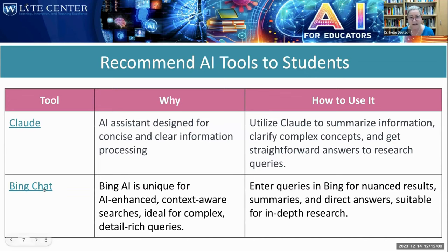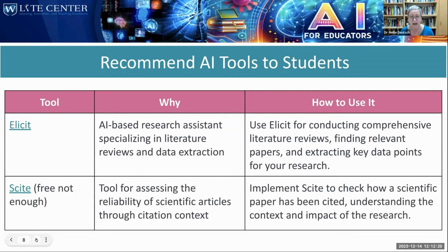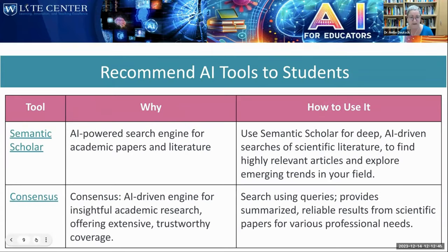And then there's Bing Chat, which is a Microsoft AI — notice just the chat, not Bing in general. ChatGPT is actually using Bing; it's embedded in Bing. I also recommend Elicit for research articles — they can get articles completely free, the ones that are open access. And Cite has a free version which isn't that great, so I prefer Elicit.